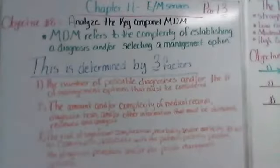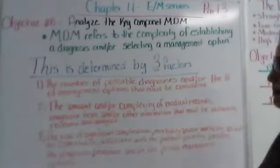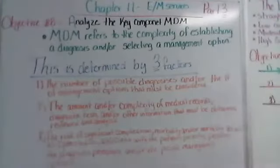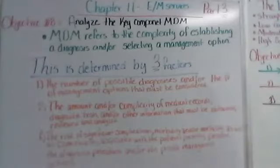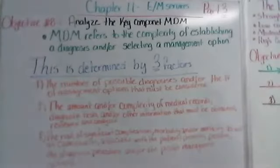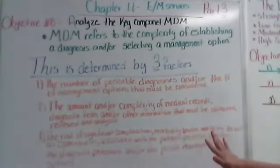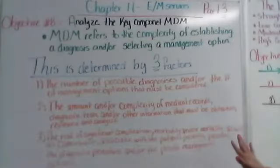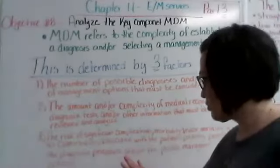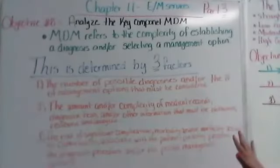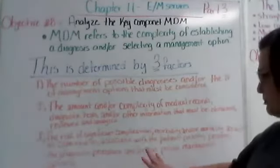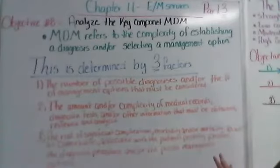Factor number one, the number of possible diagnoses and or the number of management options that must be considered. Number two, the amount and or complexity of medical records, diagnostic tests, and or other information that must be obtained, reviewed, or analyzed. Number three, the risk of significant complications, morbidity, and or mortality as well as comorbidities associated with the patient's presenting problems, the diagnostic procedures, and the possible management options.